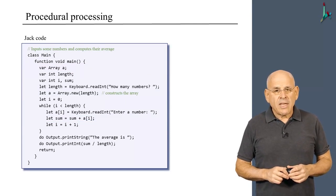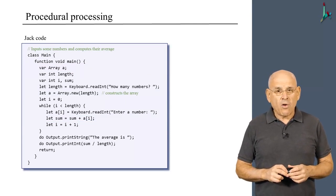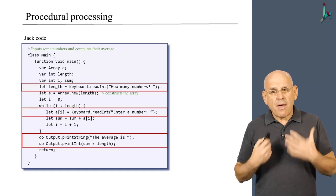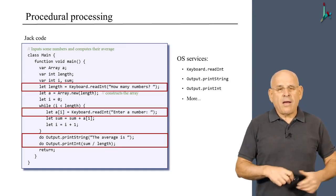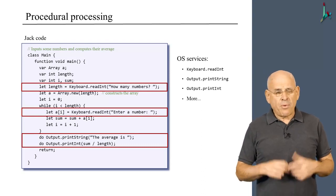What else do we see here? We see that we have some operating system calls, right? And methods like keyboard.radiant and output.printscreen and so on.